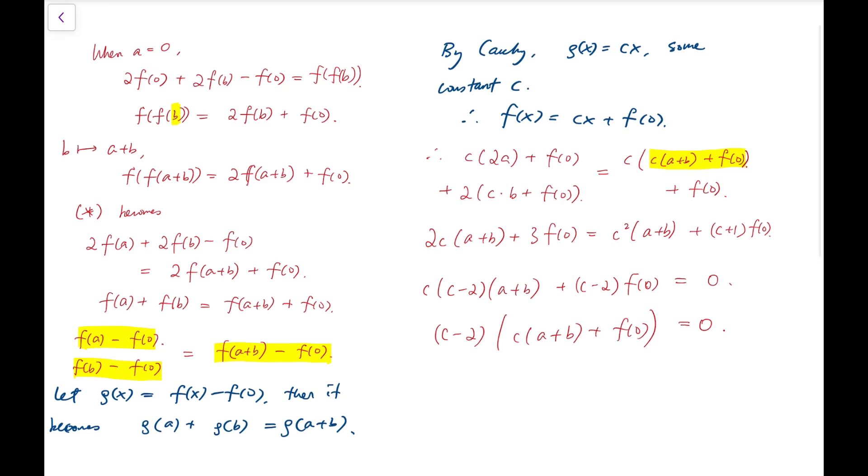Then f of x is just 2x plus f of 0. This will hold for any value of f of 0, so f of x equals 2x plus d, some constant d. Of course, d has to be an integer because we have to make sure all the outputs under f are integers. That's our first case.